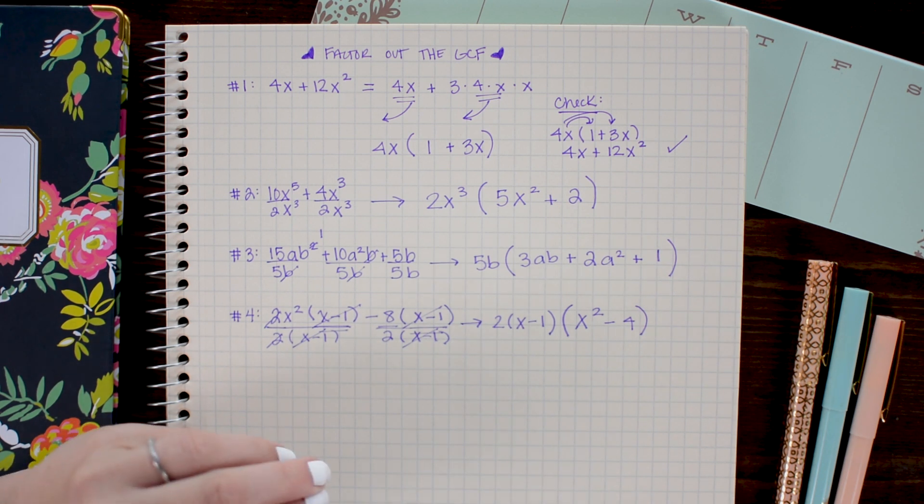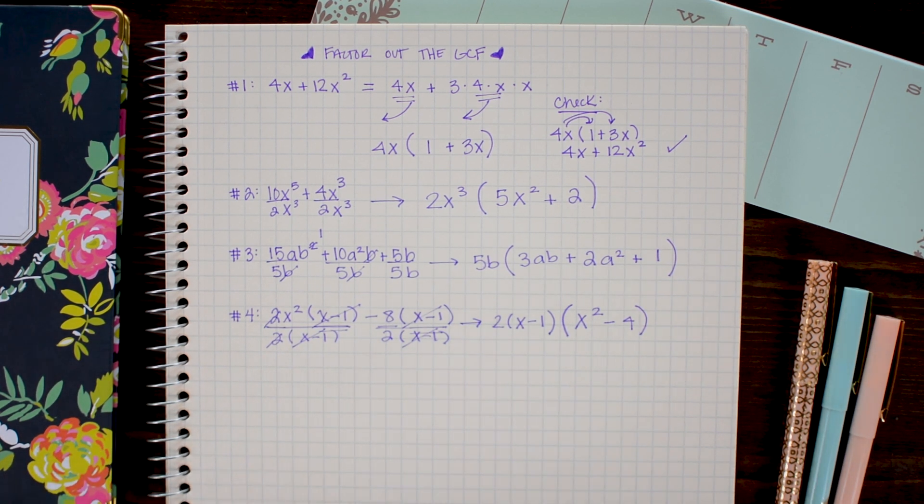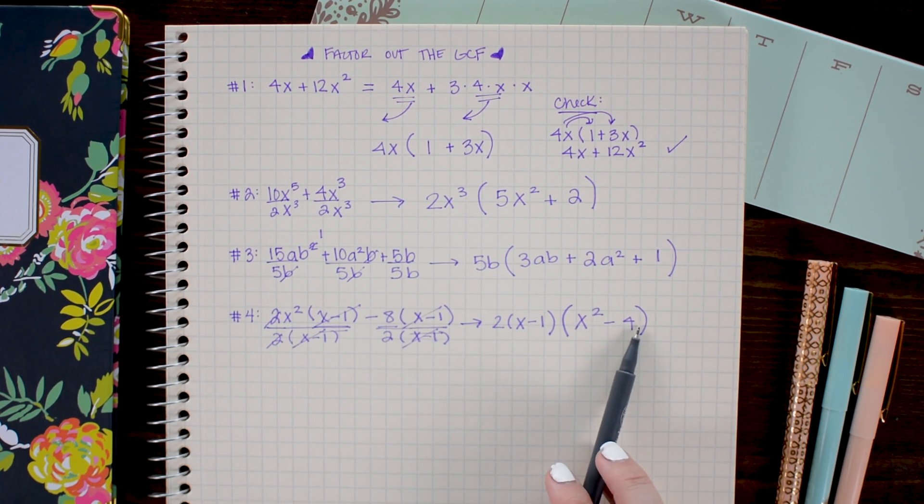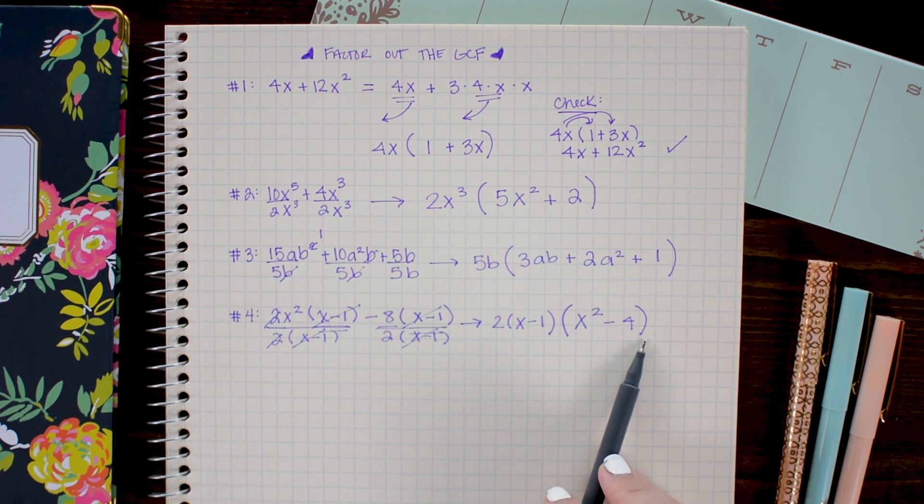Now this problem has a special little bonus problem in it because we get x squared minus 4 which is a difference of perfect squares. And I know we haven't talked about this yet but this is a great opportunity to introduce it. This can be factored into x plus 2 and x minus 2.